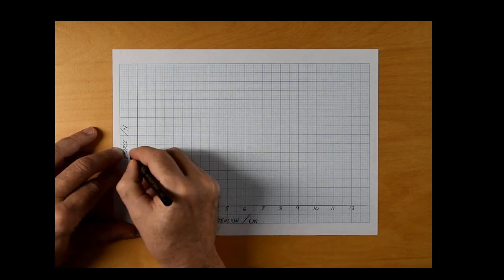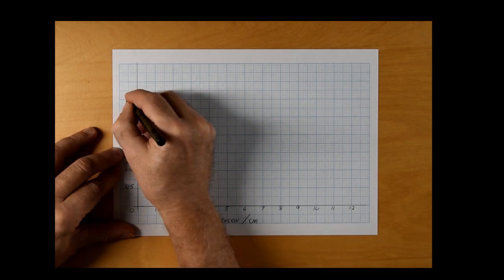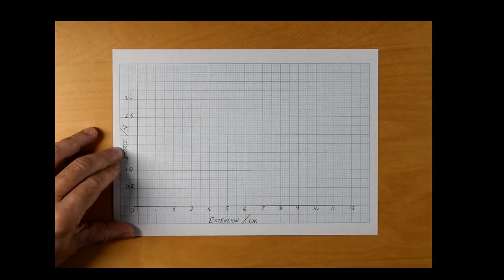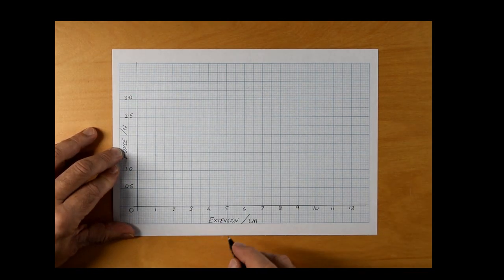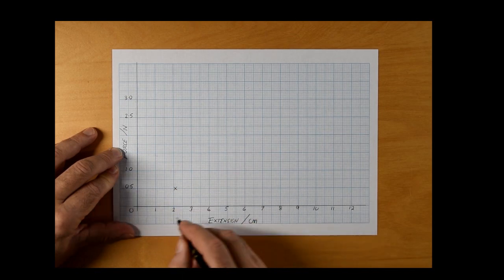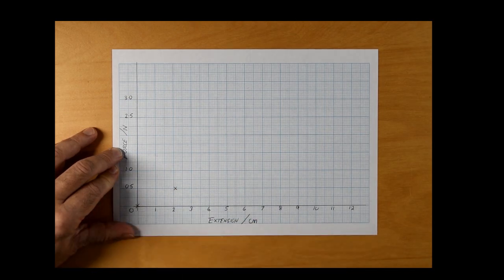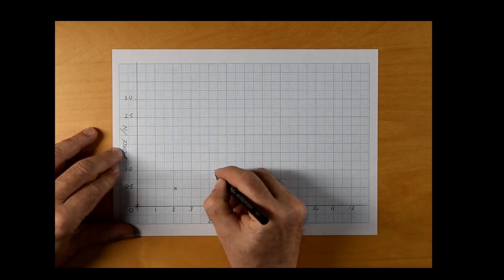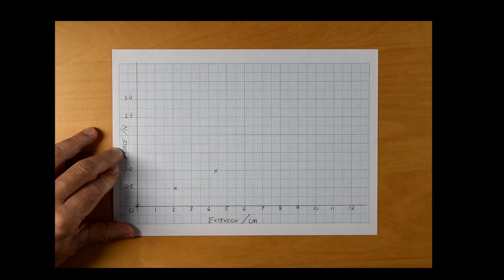As always, the graph should be as big as possible with sensible axes. So in this case, working in centimeters along the bottom going from 0 to 13, and working in newtons up the side going from 0 to 3.5.